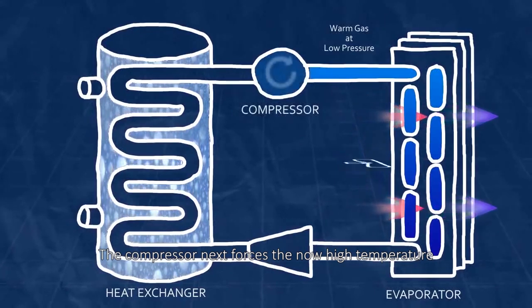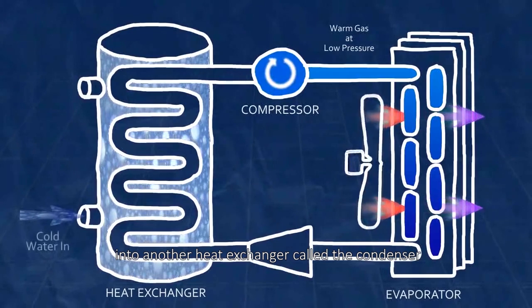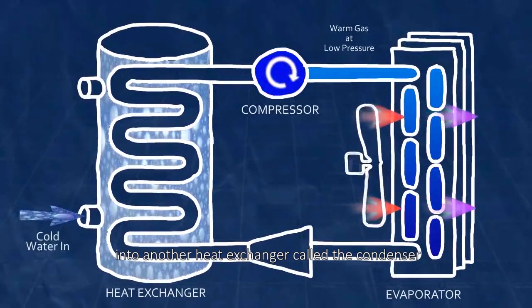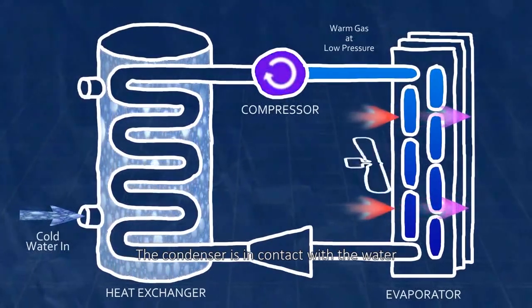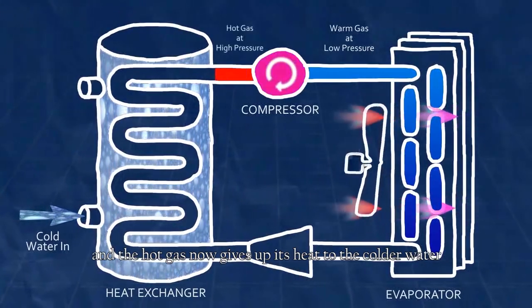The compressor next forces the now high temperature, high pressure gas further along the cycle into another heat exchanger called the condenser. The condenser is in contact with the water and the hot gas now gives up its heat to the colder water.